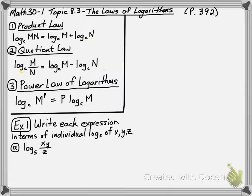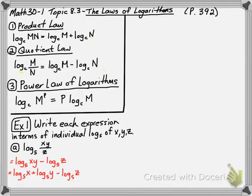So we're going to have log base 5 of x times y minus the log base 5 of z. And then we can go on and expand it further by saying it's going to be log base 5 of x plus log base 5 of y minus log base 5 of z. And that's it, simplified.